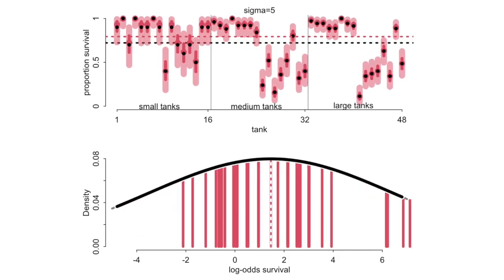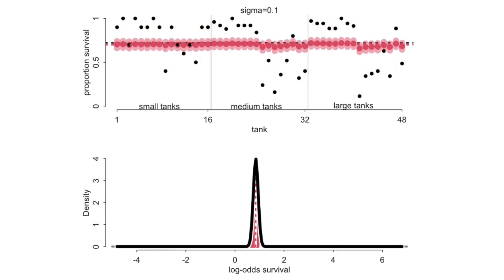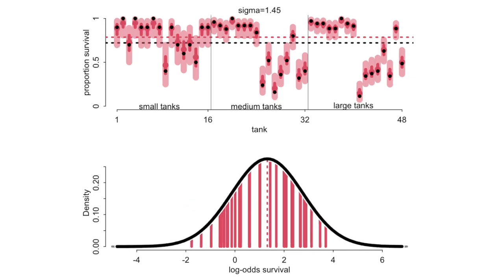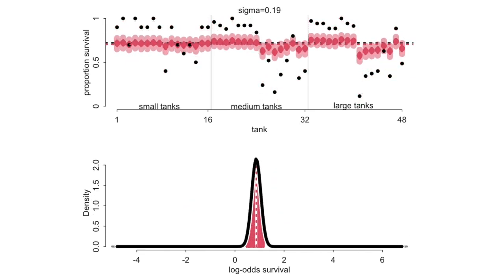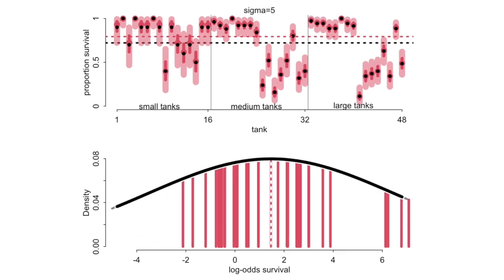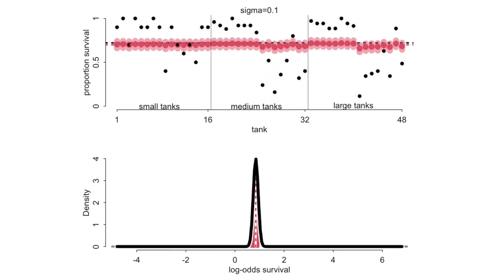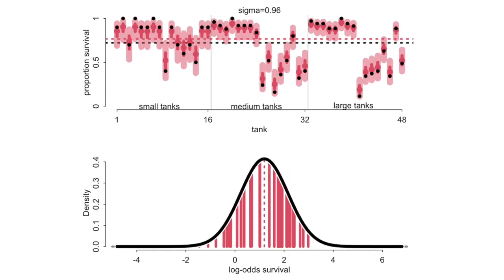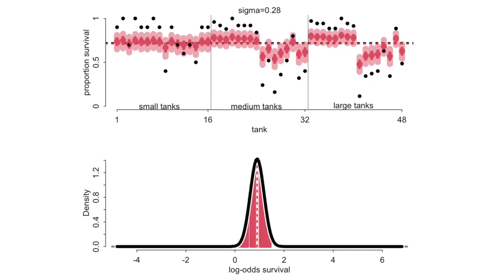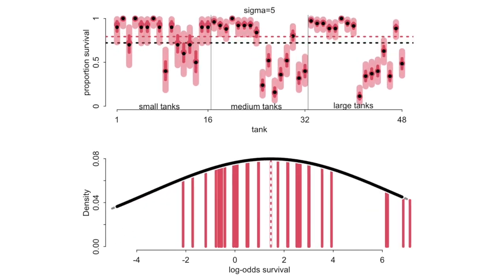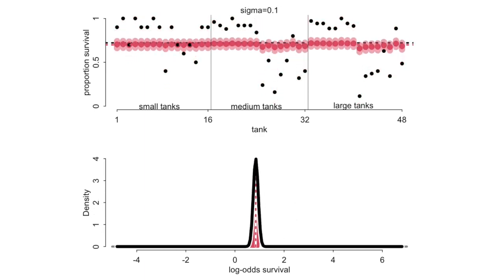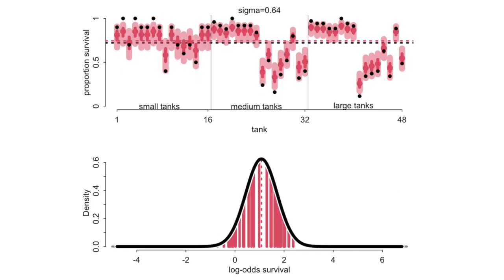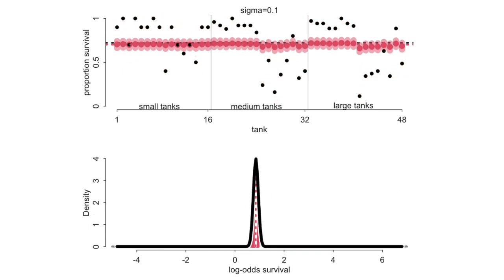On the other end, when sigma is a very large number like 5, the model could possibly overfit the data — it may be too flexible and insufficiently skeptical. I've been encouraging you to choose more skeptical priors than a sigma of 5. So what's the right sigma?